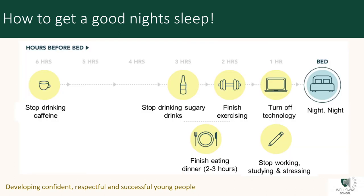It is important to get into good habits when it comes to sleep. This can start as far as six hours before you go to bed, when you should stop any intake of caffeine. Sugary drinks and large meals should be at least two to three hours before bedtime. And while we can all agree on the benefits of regular exercise, anything overly strenuous within two hours of bed can lead to a disrupted night's sleep. Turn off that technology an hour before bed to allow that circadian rhythm a chance to kick in.